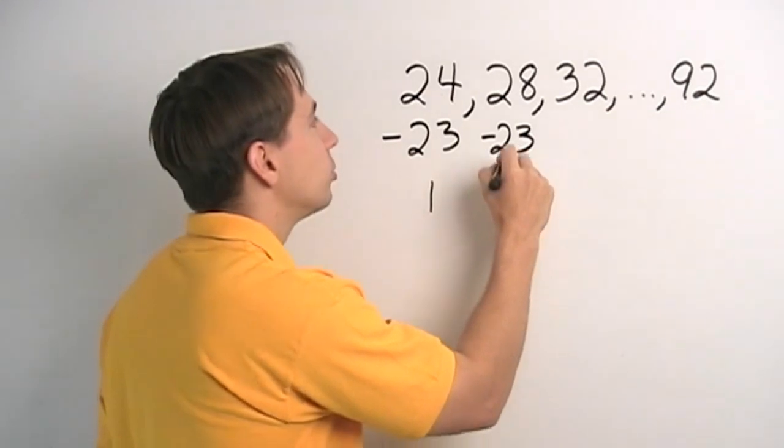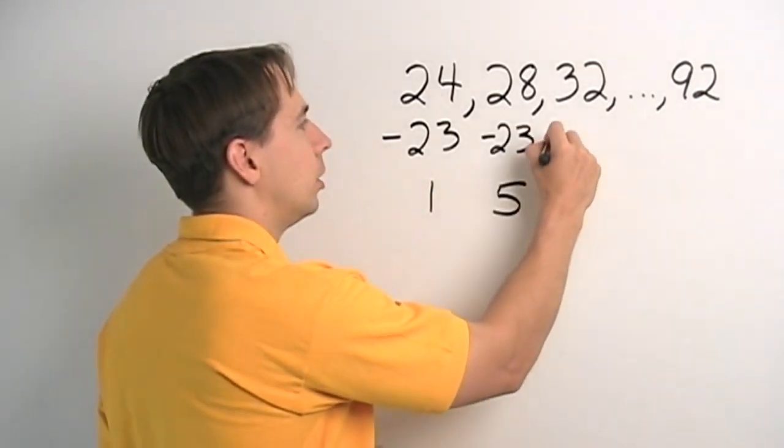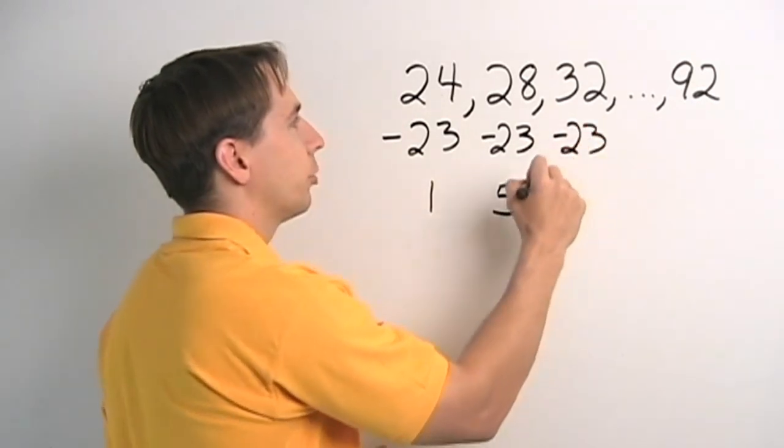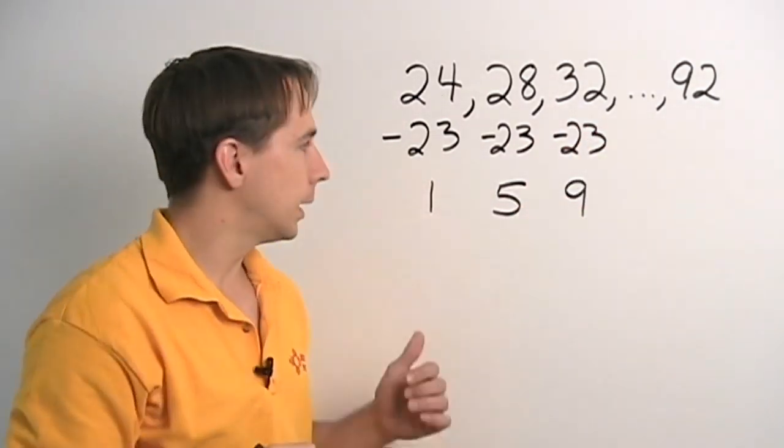And the next number, I'll do that, 28 minus 23, that gives, uh-oh, that gives us 5. And we subtract 23 from 32, we get 9. That's a problem.